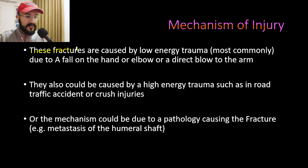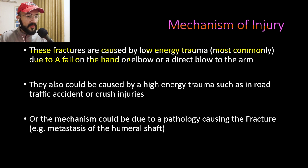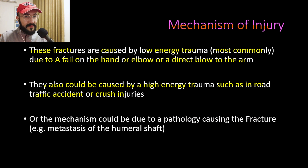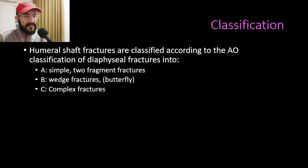Moving on to the mechanism of injury: humeral shaft fractures are caused by low energy trauma, which is the most common mechanism, occurring due to a fall on the hand or elbow or a direct blow to the arm. They can also be caused by high energy trauma such as road traffic accidents, or by pathology in the humeral shaft such as metastasis.